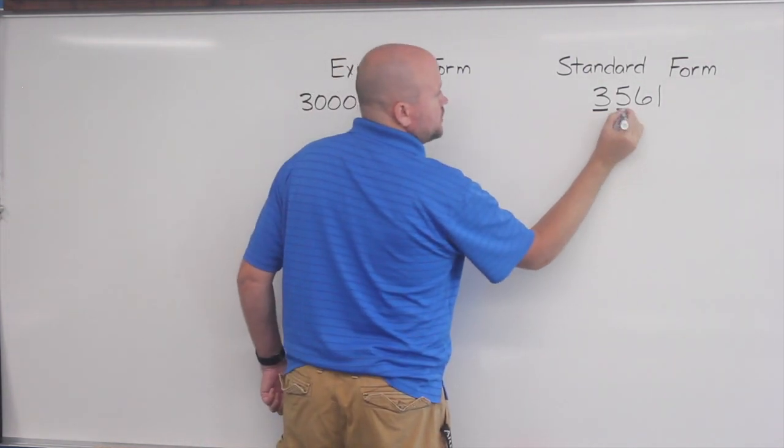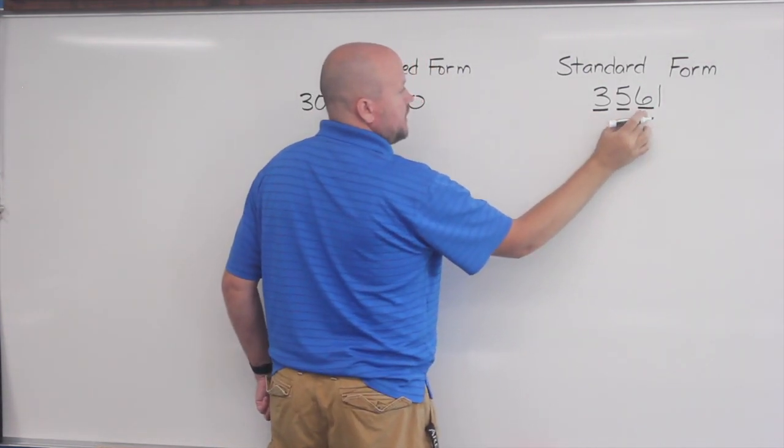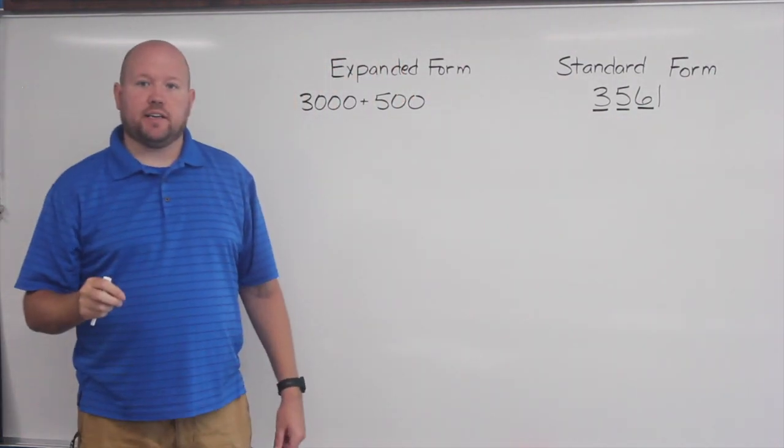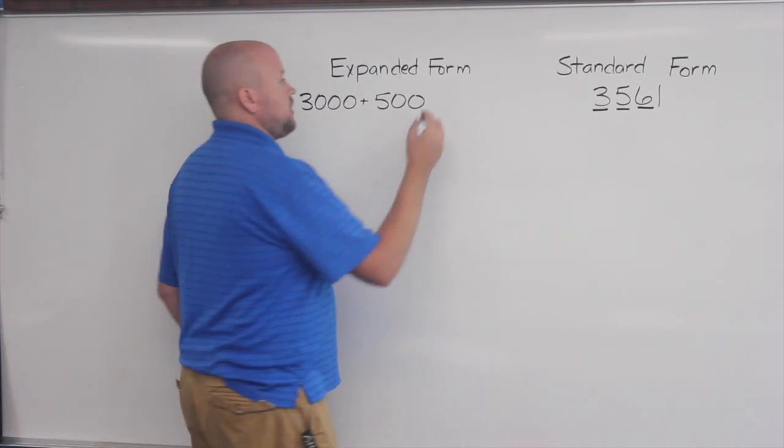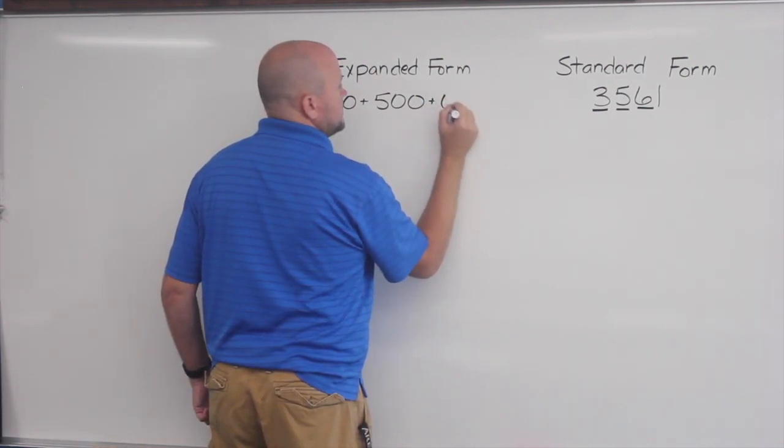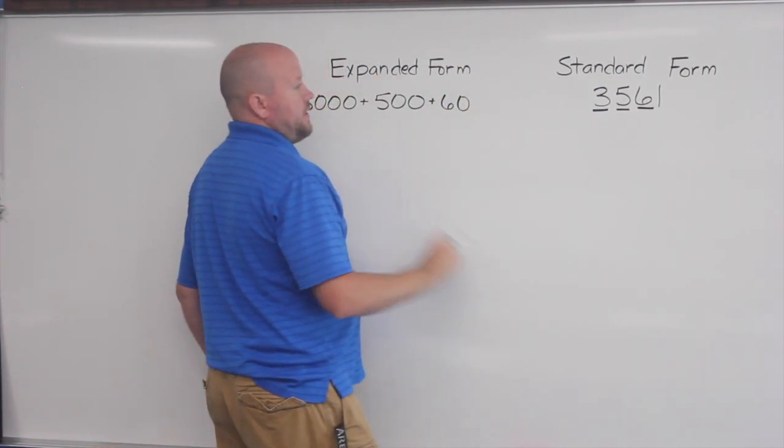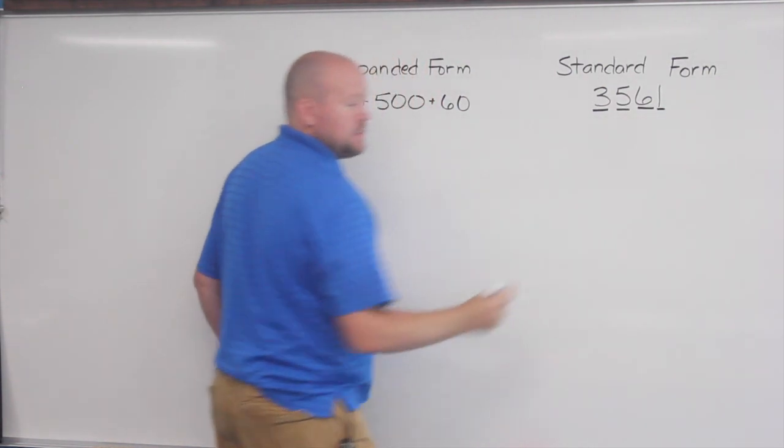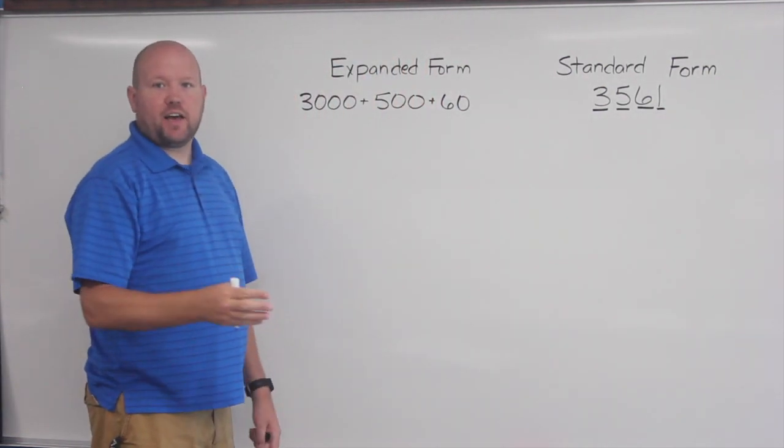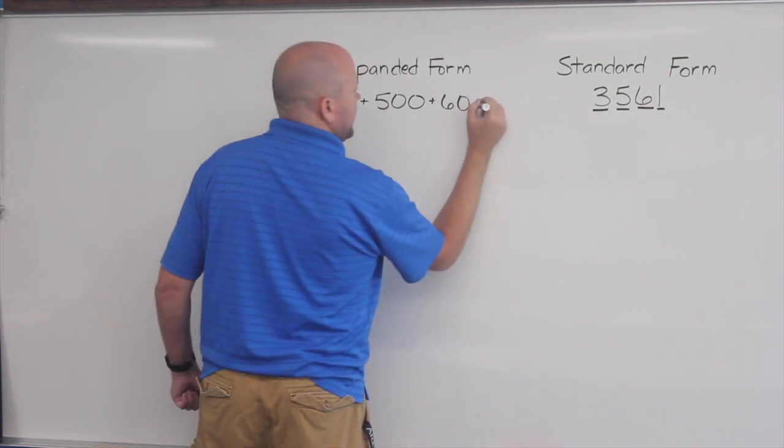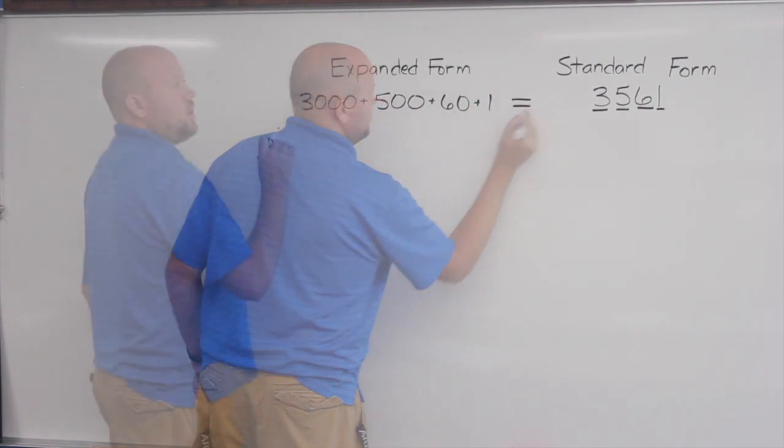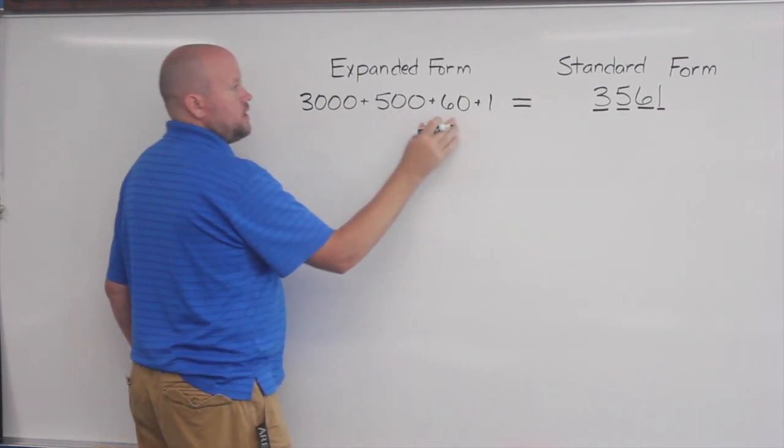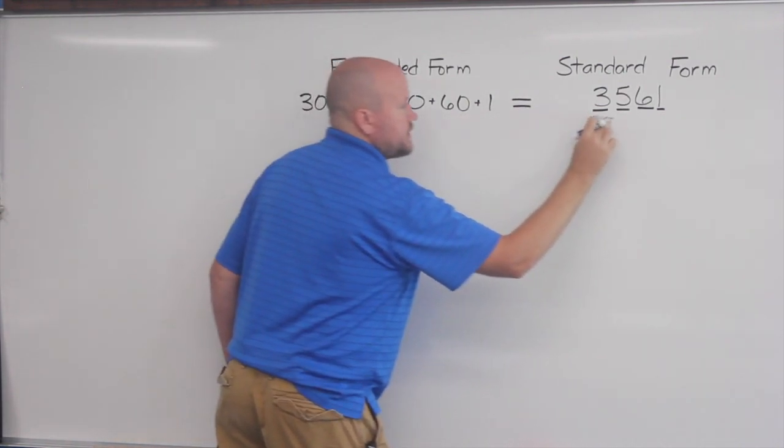Next I want to do the 6. The 6 is in the tens place, which means that its value will be 60. I'll put plus 60. And then last I have a 1 in the ones place. Because it's in the ones place, the digit and the value are the same, so it's plus 1. When I finish, the expanded form should equal the standard form.